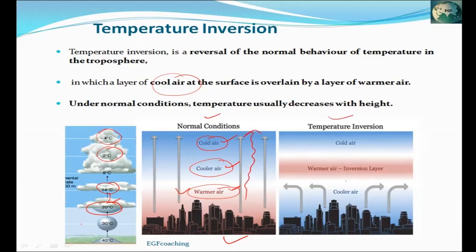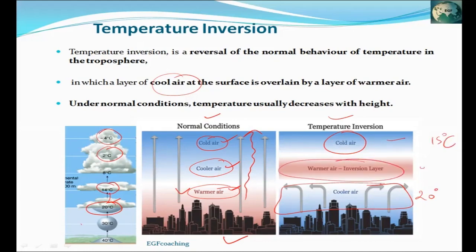But in the inversion condition, there is cool air at the bottom — say 15–20 degrees Celsius — and then warmer air above it at 30 degrees Celsius or more. This warm layer above the cool surface air is called the inversion layer.